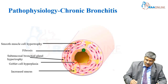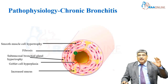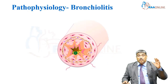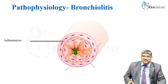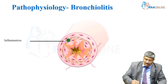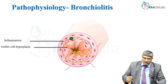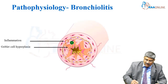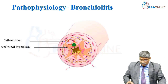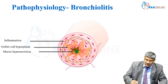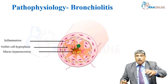All of this makes the bronchus narrower and it becomes obstructive. Coming to bronchiolitis, that is a smaller airway disease. Here there is inflammation and infiltration with monocytes and neutrophils. There is goblet cell hyperplasia, which is more than what is seen in chronic bronchitis, and mucus hypersecretion going inside the lumen and narrowing it further.